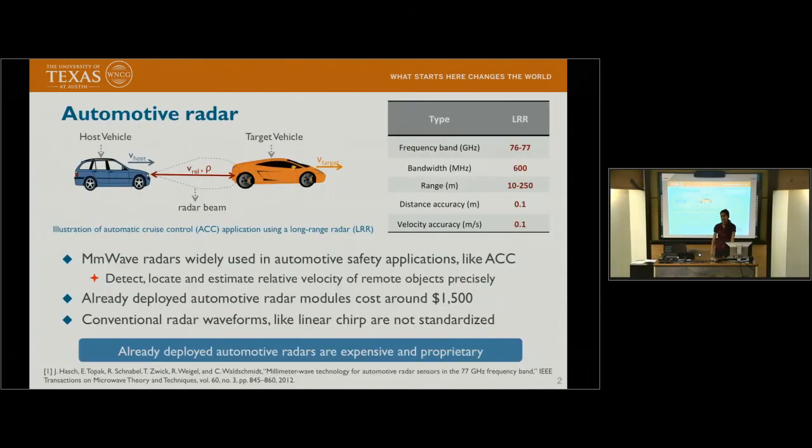First, let's get into an application of automotive radar, such as automatic cruise control. In this application, there is a host vehicle and a target vehicle. The host vehicle is trying to keep a constant time gap from the target vehicle. So what it does is it estimates the range and velocity of the target vehicle using signals such as conventional radar waveforms like linear chirp signals. However, they are not standardized. These systems are generally available in luxury cars and cost around $1,100 or $1,500. So automotive radars are expensive and they are proprietary, that is not standardized.